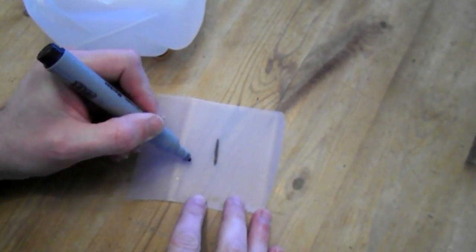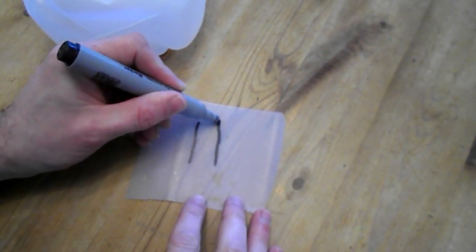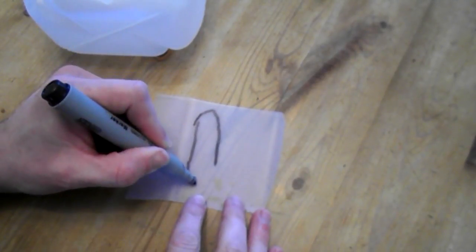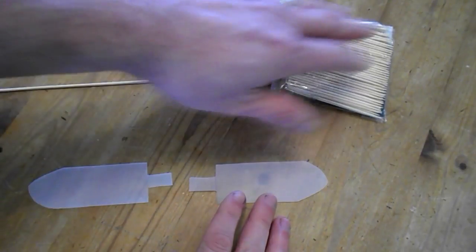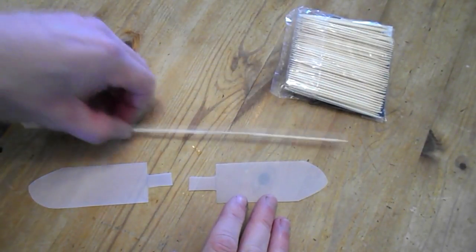What we can do is just sketch two propellers and then cut them out. Now we're going to stick them together. You can use a toothpick or a skewer, anything you have to hand.